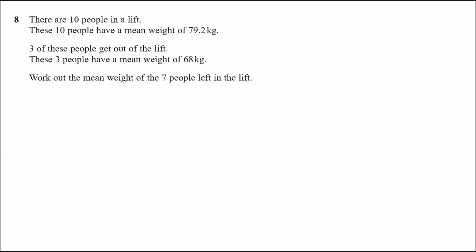Question 8: there are 10 people in a lift with a mean weight of 79.2 kg. Three of these people get out of the lift; these three people have a mean weight of 68 kg. We need to work out the mean weight of the seven people left in the lift.